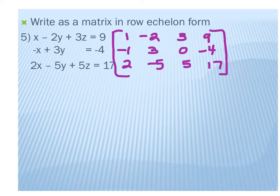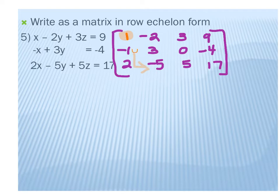I gave the recommendation last week about a suggested order — you don't have to do it this way, but most of the time it works. The first thing I do is get a 1 in the top left corner, which is already done. Then the second thing is to get a 0 below that 1. So I want the negative 1 in the second row to become a 0, right underneath that 1. Work your way down and over with the 0s.